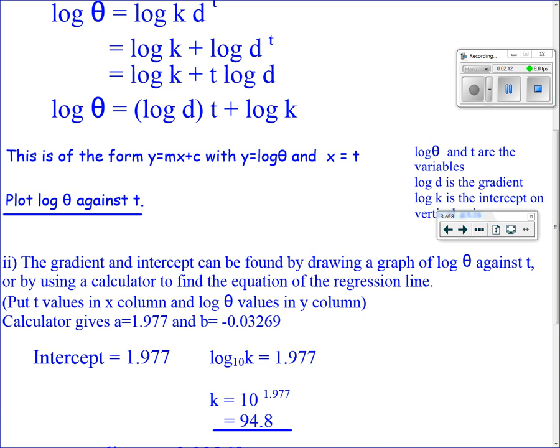So the intercept on the vertical axis, 1.977, is log₁₀ k. And so we can work out from that what k is. k = 10^1.977 = 94.8.